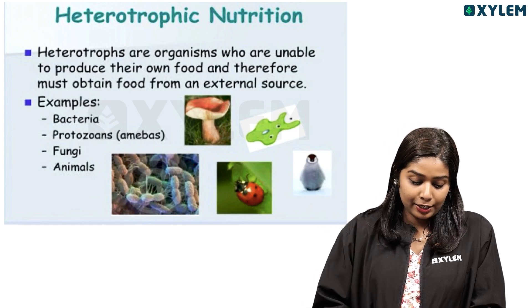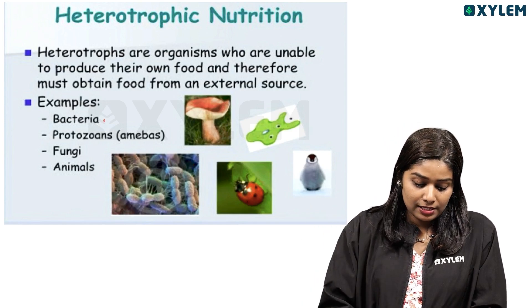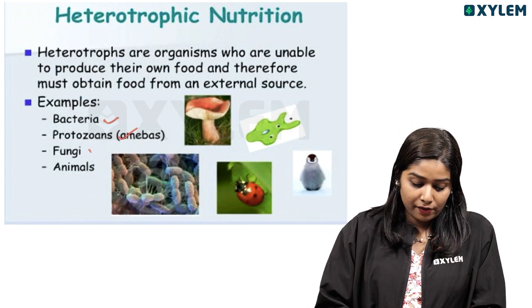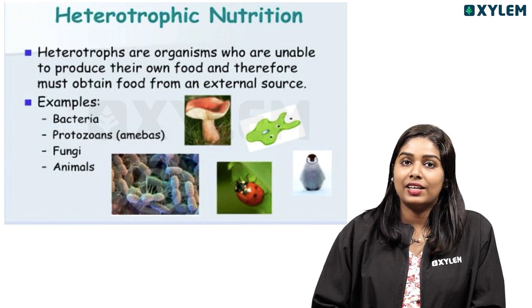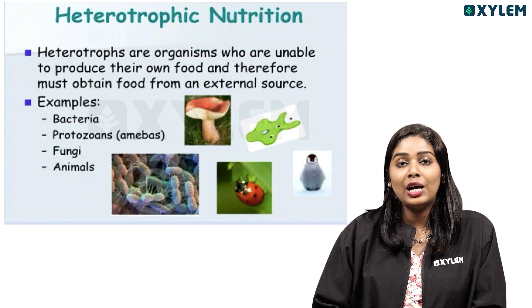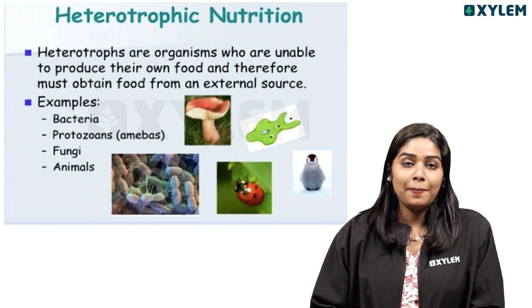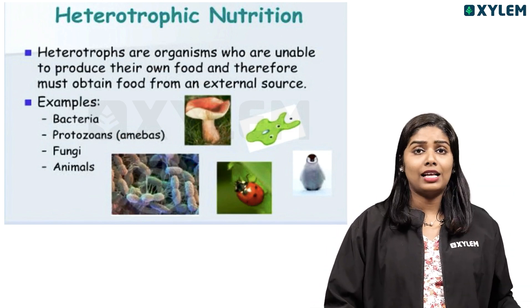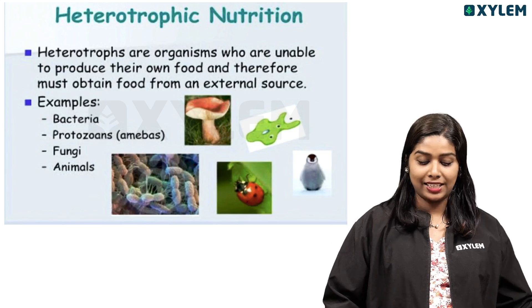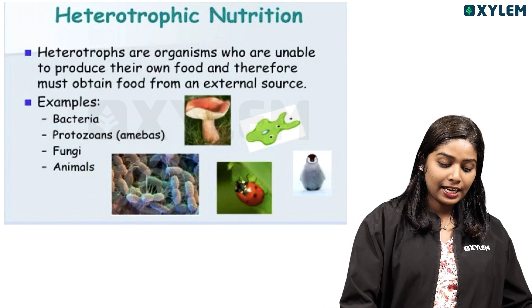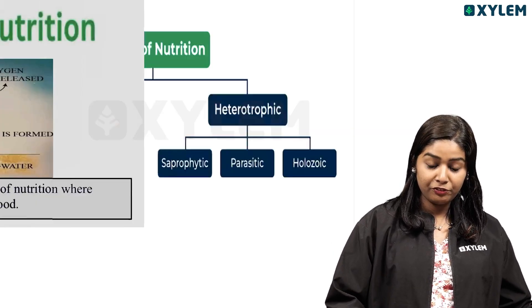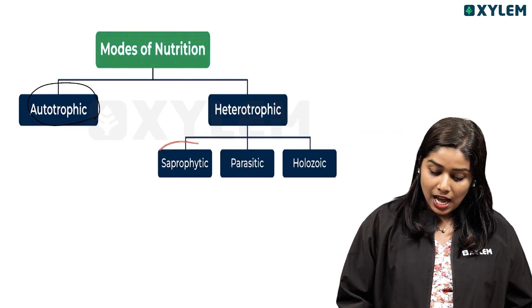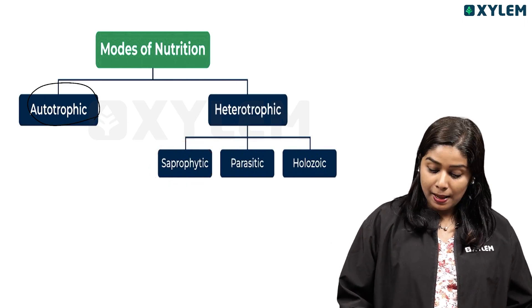Some examples of heterotrophic organisms are bacteria, protozoans, fungus, and animals. We will get into detail and classify heterotrophic organisms further.